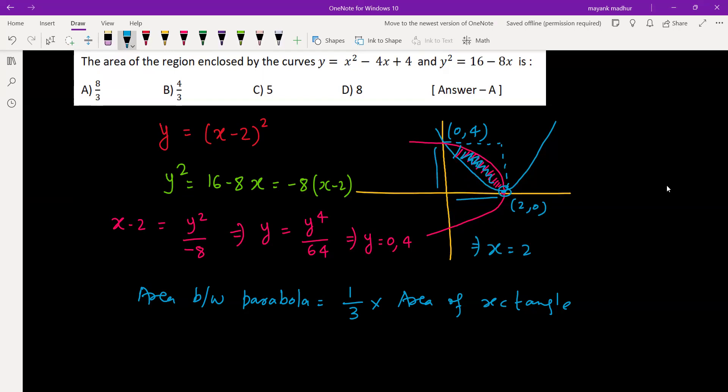So this length is 2 and height is 4, so one third of 2 into 4 which is 8 by 3. Let's check what is the answer given - 8 by 3. Answer is the first option, same we are getting.